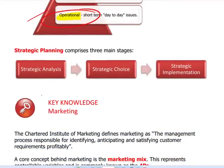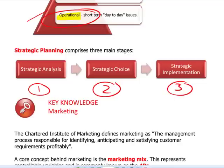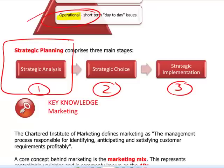We have three main stages of the strategic planning model. For those of you when you get to Paper P3, you will recognize this — it's part of the rational model of strategy. It has three main stages: one, analysis; two, choice; three, implementation. When it comes to planning, at the analysis stage we analyze our objectives, key stakeholders, resources, and what's happening in the environment.